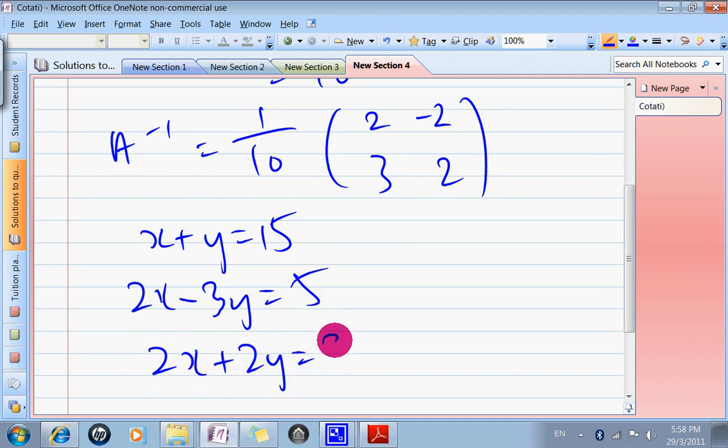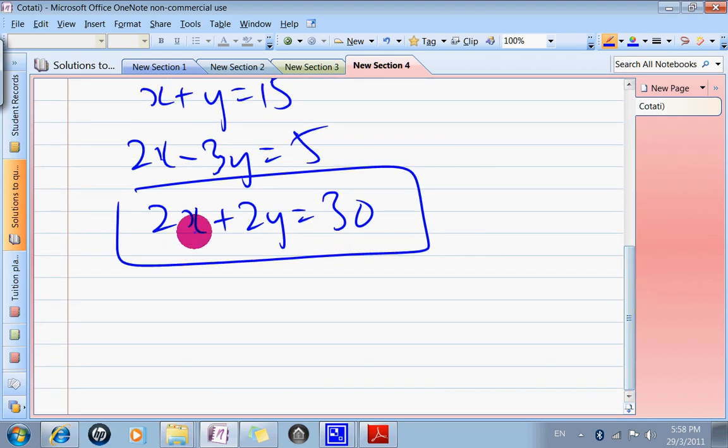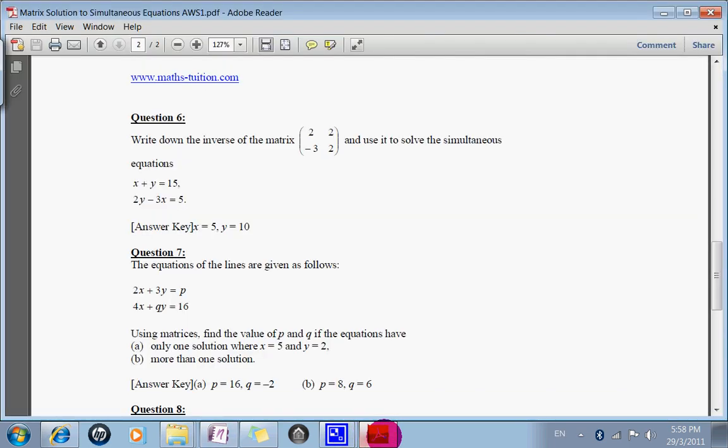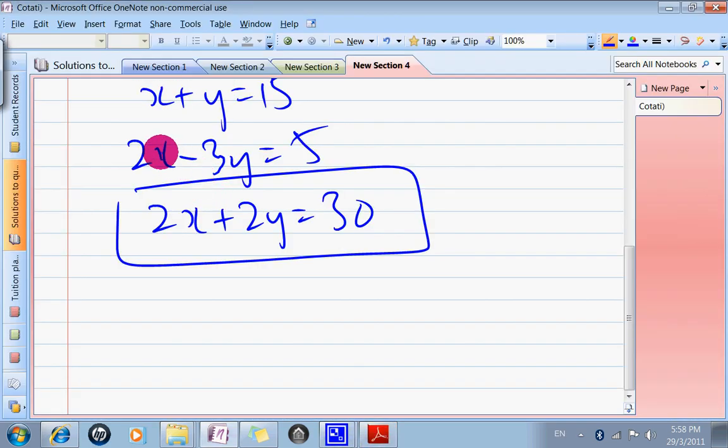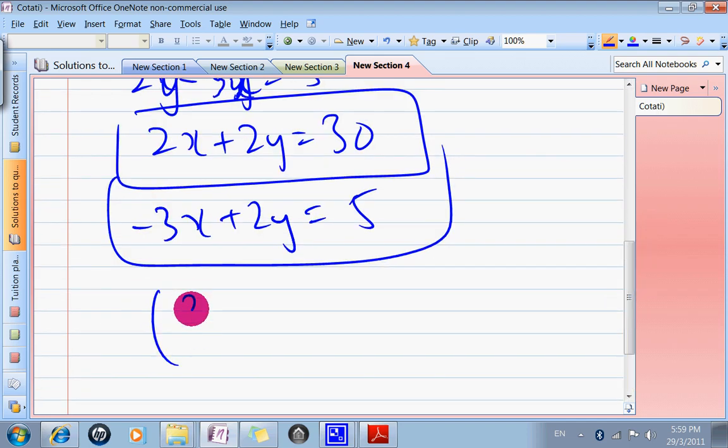We must make the first equation and change it to 2x plus 2y equals to 30. That's my first equation. The second equation needs to be negative 3 in front. I think I copied it wrongly. The equation is 2y minus 3x. So rearrange it. Negative 3x plus 2y equals to 5. That's my second equation. Therefore, I can say that 2, 2, negative 3, 2 times x, y equals to 30, 5.